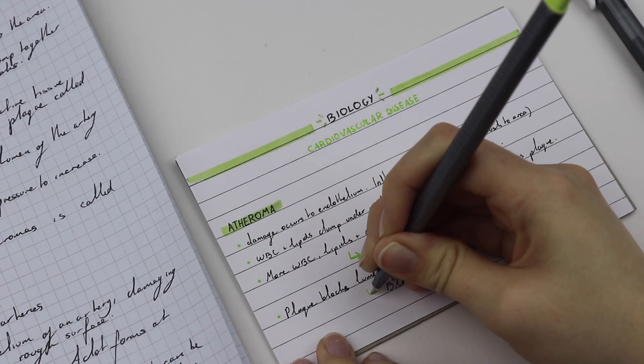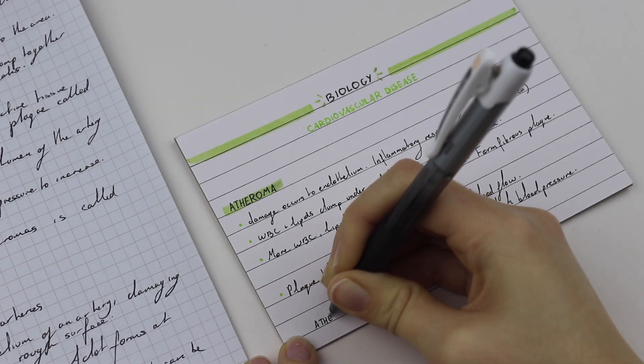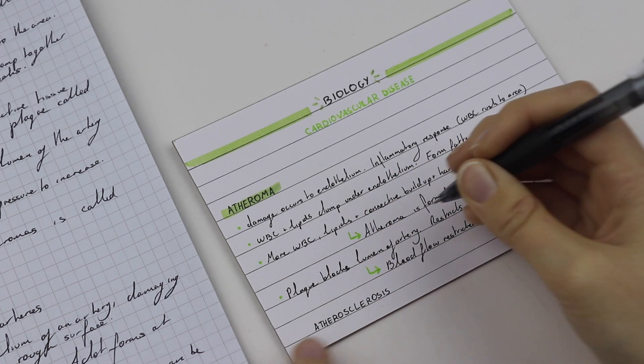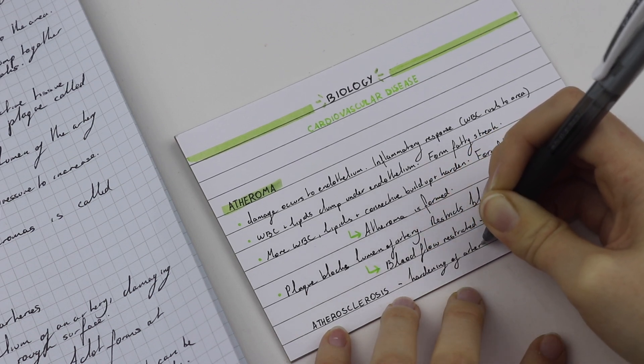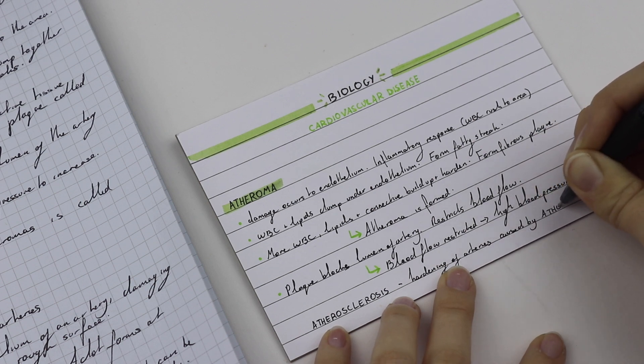I also like to make sure that all of the bullet points and arrows are aligned so, again, it's easy to find everything. At the bottom here I've just written some extra information and atherosclerosis in capitals so it stands out. If you really want something to stand out, you can write it in capitals or perhaps write it in the cohesive color that you're using. I decided to highlight it in the gray.